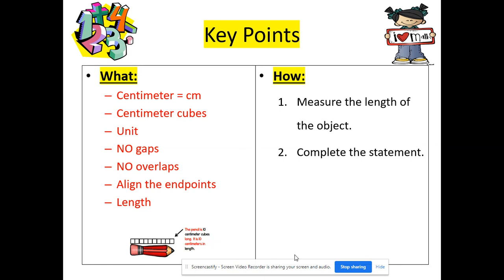How are we going to be successful? All we have to do is measure the length of the object, and then just complete the statement. Easy. For right now, you can just have your whiteboard or your paper ready, but we do not need it yet. Just make sure we are listening and observing what we are doing, so that we can learn and be successful today.